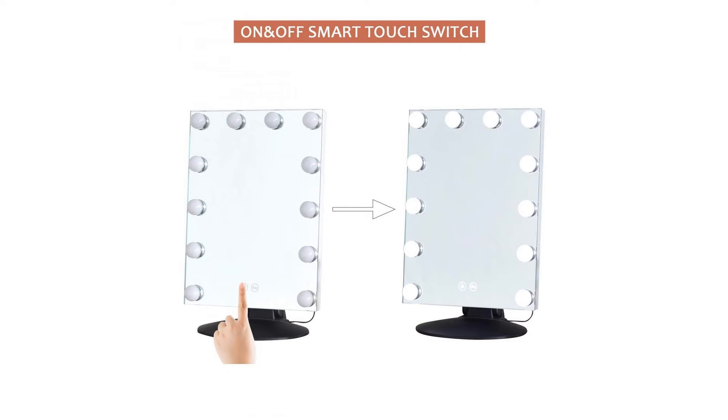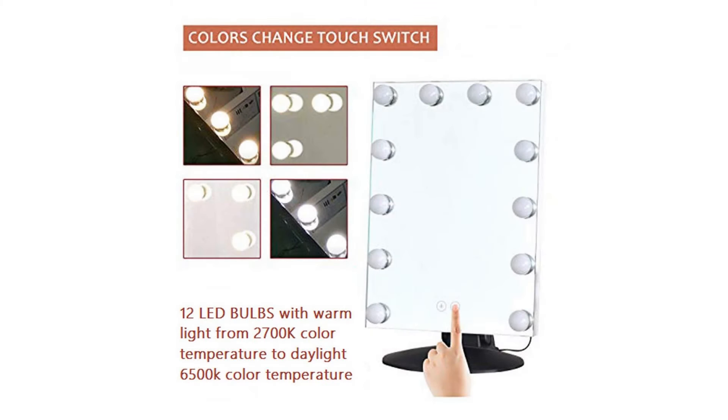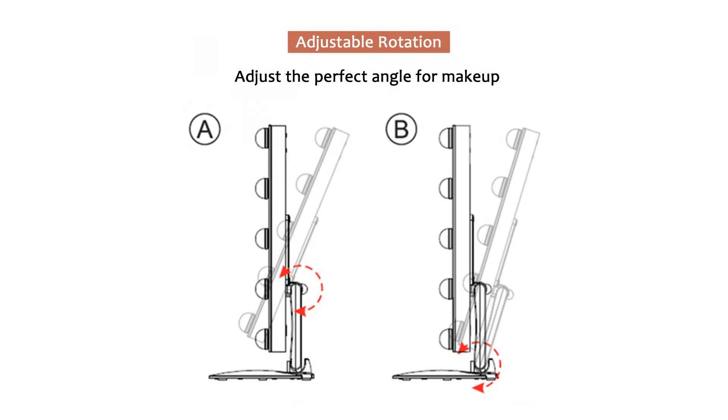Smart Touch Control and Memory Design. Simply turn on/off the light and adjust the brightness by touching the sensor switch on the screen. Memory function makes the LED light return to the same brightness when turned on again.